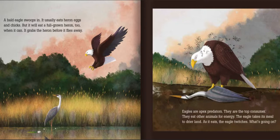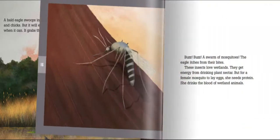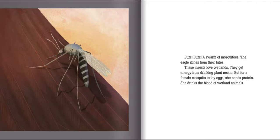The eagle takes its meal to drier land. As it eats, the eagle twitches — what's going on? Buzz, buzz, buzz! A swarm of mosquitoes. The eagle itches from their bites. These insects love wetlands; they get energy from drinking plant nectar. But for a female mosquito to lay eggs, she needs protein — she drinks the blood of wetland animals.